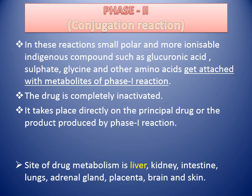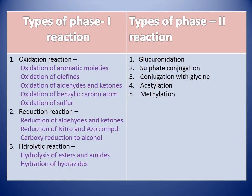If we talk about phase 2 reactions, they are also known as conjugation reactions. In these reactions, small polar and more ionizable endogenous compounds such as glucuronic acid, sulfate, glycine, and other amino acids get attached with the metabolites of phase 1 reaction. The drug is completely inactivated in phase 2, and phase 2 reaction takes place directly on the principal drug or the product produced by phase 1 reaction.